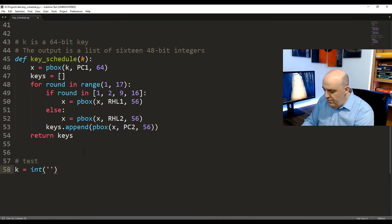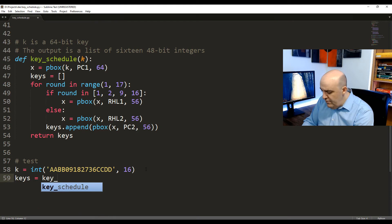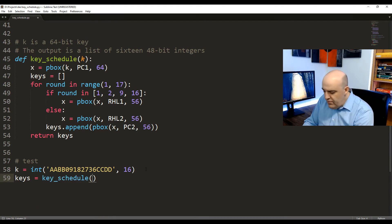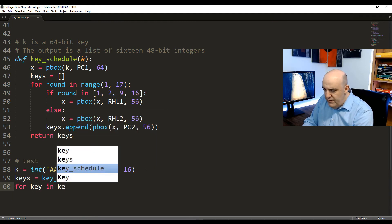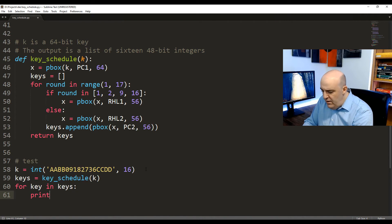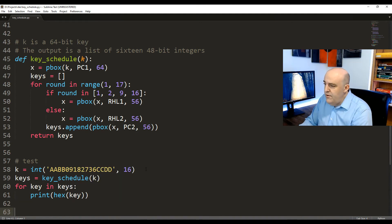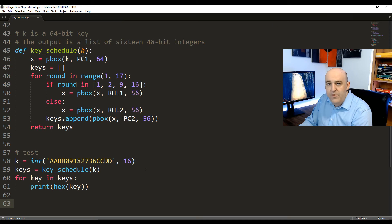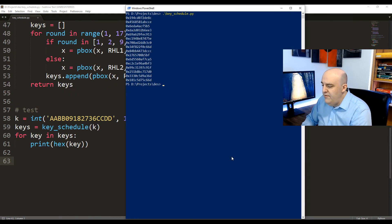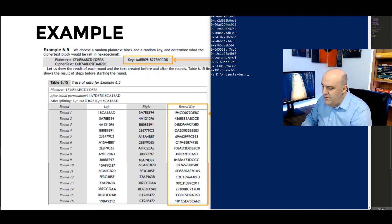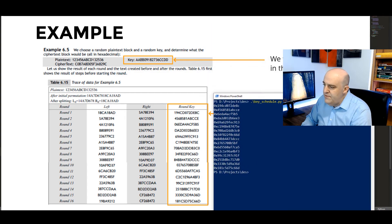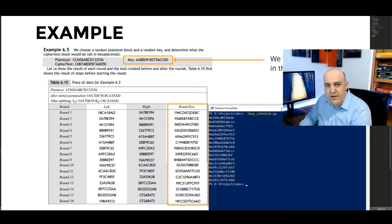So let's define K to be that key that's given in that document. And then we'll call our key schedule on that key. We'll store it in a variable called keys. And then let's just print off each key in that list. And we'll just need to change the key into a hex value. And then we can run it. And let's compare those to the document. So when we run our key schedule on this key, let's see if we get the proper round keys. And we do. We see that each of the 16 round keys are matching the expected value given from the textbook here. So that's how we can implement the key schedule of DES in Python.